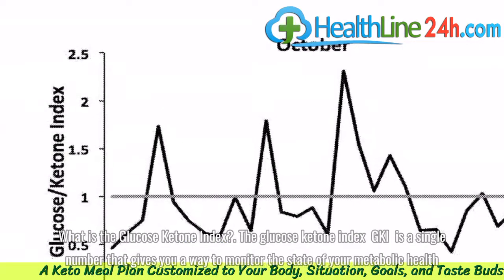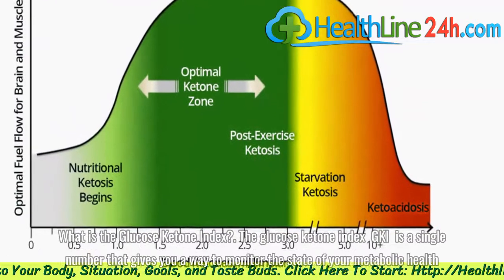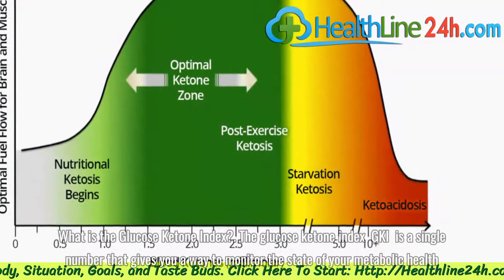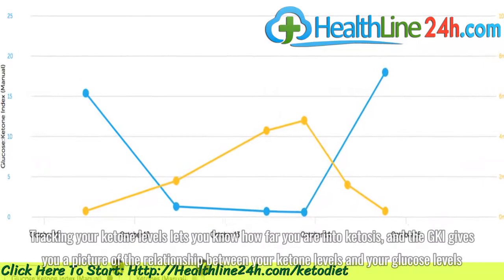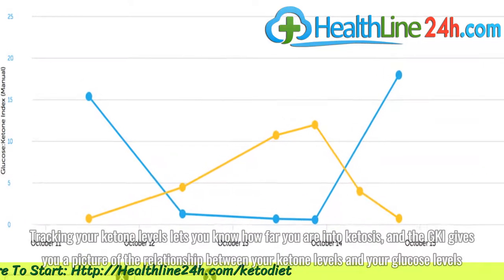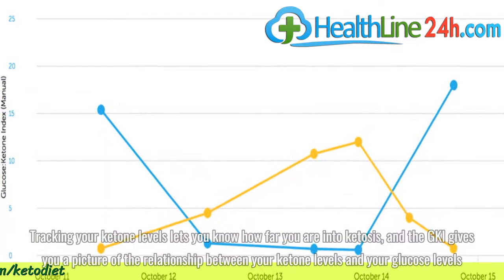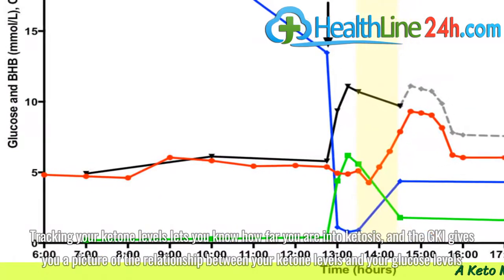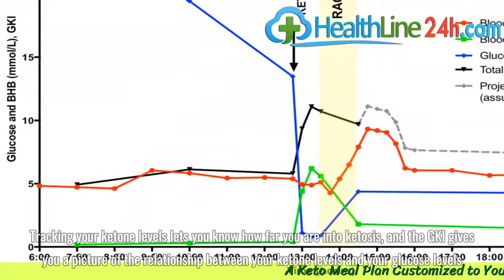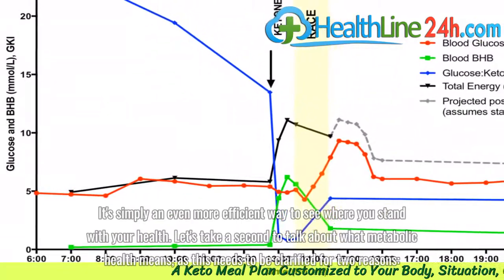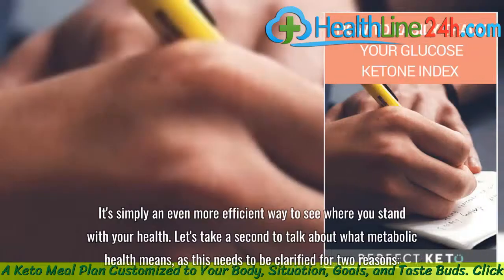What is the glucose ketone index? The glucose ketone index GKI is a single number that gives you a way to monitor the state of your metabolic health. Tracking your ketone levels lets you know how far you are into ketosis, and the GKI gives you a picture of the relationship between your ketone levels and your glucose levels. It's simply an even more efficient way to see where you stand with your health.